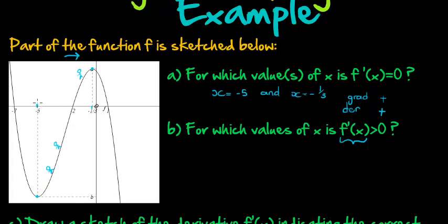Well, it's the values between negative 5 and negative 1 third. So the answer here is, for which x-values do we have the derivative greater than 0? For all of the x-values from negative 5 up to negative 1 third.